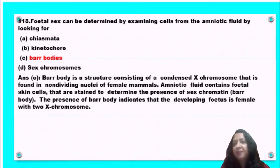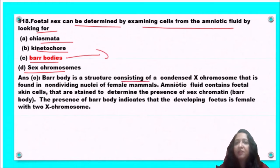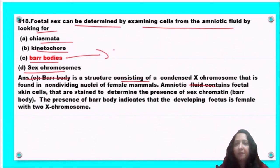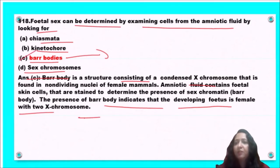Next question: fetal sex can be determined by examining cells from amniotic fluid by looking for chiasmata, kinetochore, Barr bodies, or sex chromosomes? Barr bodies are structures consisting of an inactivated X chromosome found in non-dividing nuclei of female mammals. The presence of a Barr body in amniotic fluid cells indicates the developing fetus is female with two X chromosomes. So Barr bodies are used for sex determination.